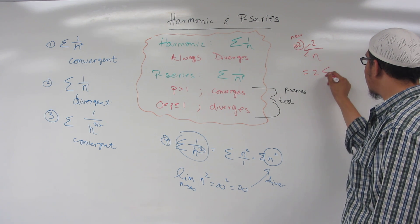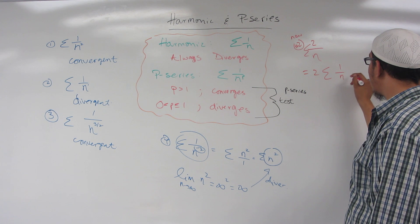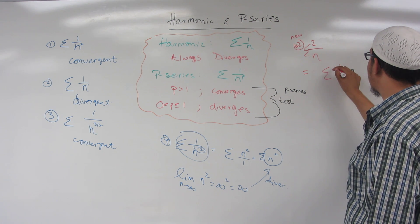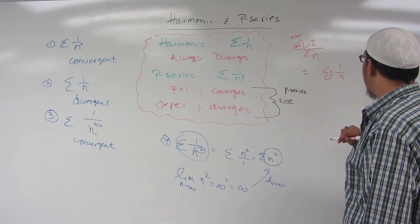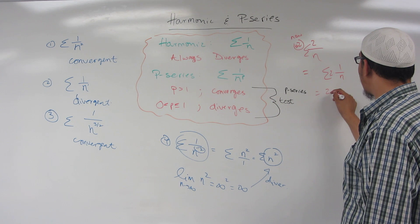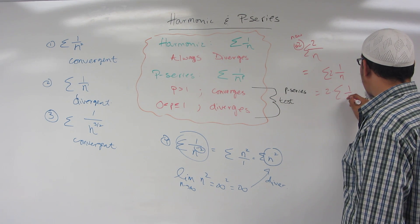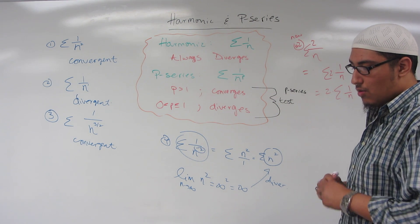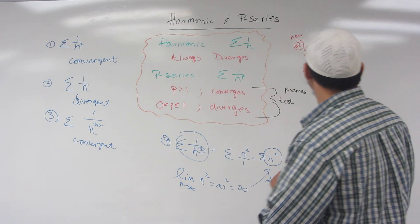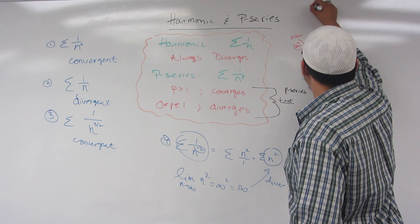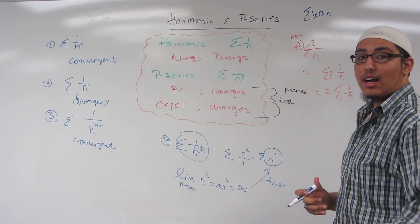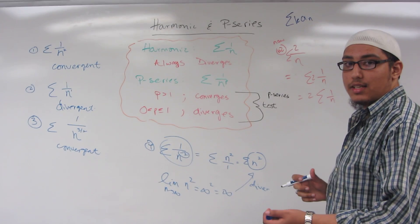Well, we can write the two inside, and just factor it out, and then we can bring it outside. Why can I bring it outside? Well, the rules of series say that if we have sigma k times a sub n, k being any constant value, a sub n being any series,